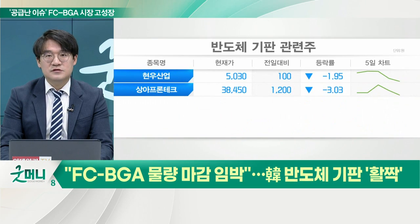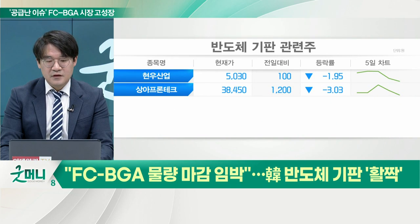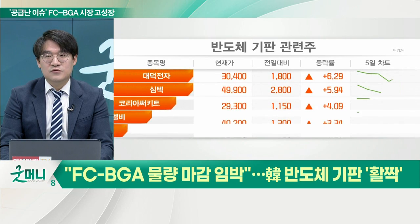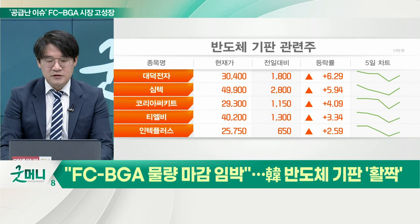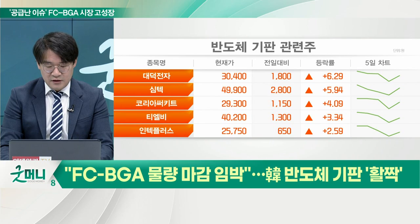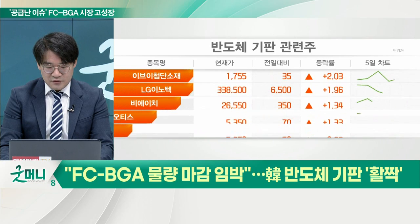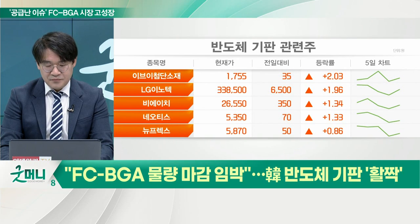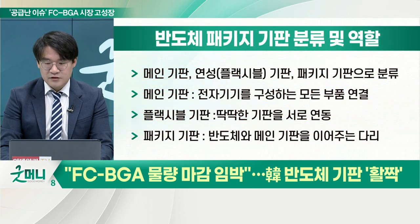기판 중에서 FCBGA가 각광을 받는 이유는 기기들이 첨단화되고 경박단소화되기 때문입니다. 그렇기 때문에 그 안에 들어가는 고부가 기판들이 필요하게 됩니다. 기판을 분류한다면 메인 기판, 플렉서블 기판, 패키지 기판 이렇게 나눌 수가 있는데요.